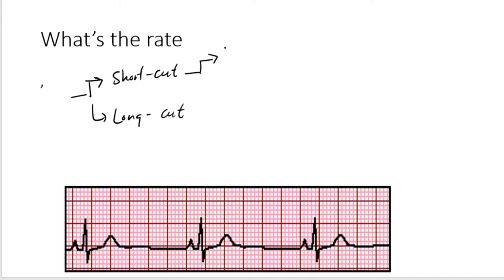The shortcut, the prerequisite is there should be a regular rhythm. You can only use it if the rhythm is regular, which means from the R to the R, it should be the same from this R to this R. That's the regularity. You can't be doing it in irregular rhythms, otherwise it will not be accurate. So the short method, as it is, it's very fast, but it's not the most accurate.